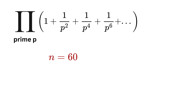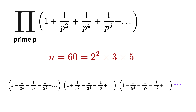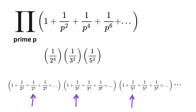Take n equals 60 as an example. Its prime factorization is two squared times three times five. In the product expansion, this term comes from picking one divided by two to the fourth from the prime-two series, one divided by three squared from the prime-three series, one divided by five squared from the prime-five series, and one from every other prime series. Multiplying these together gives one divided by 3600, which is one over 60 squared.